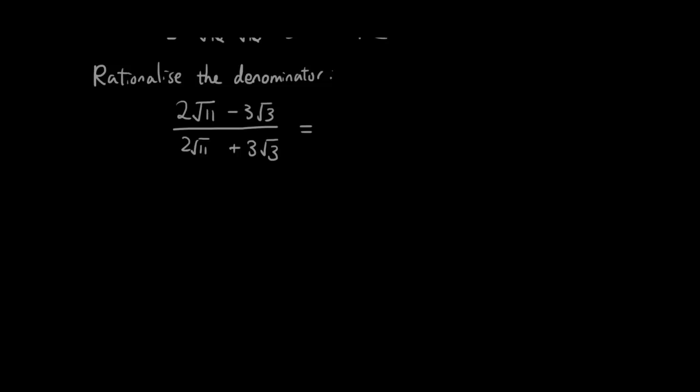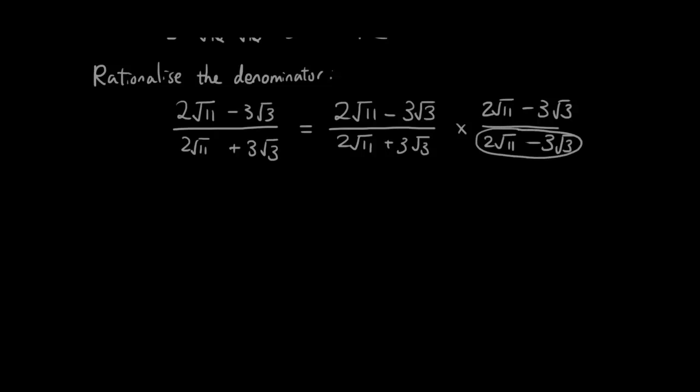So I'm going to multiply both the top and the bottom by the conjugate of the denominator. So I'm just copying the top part right now and the bottom is same as what it was. And then I'm multiplying both the top and the bottom by the conjugate of the denominator. So I have to multiply both the top and the bottom by 2 square root of 11 minus 3 square root of 3. 2 square root of 11 minus 3 square root of 3. Because this term, this term here is the conjugate of this term.